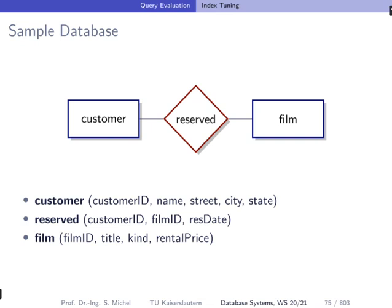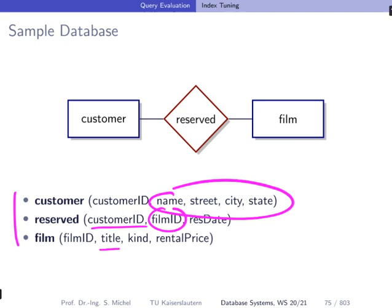Let's assume we have one sample database about a movie rental, so we have customers reserving films. In total we have three database tables: customers, reserved, and film. There is a common customer ID and a film ID, so using the relation 'reserved' you can connect which film with which title was reserved, which customer did this, and where the customer is living.